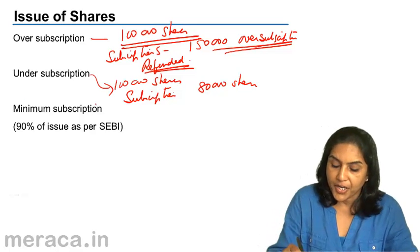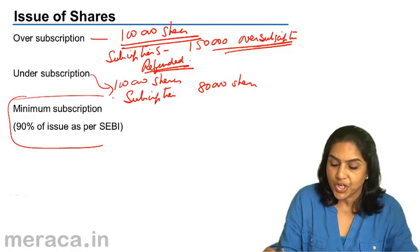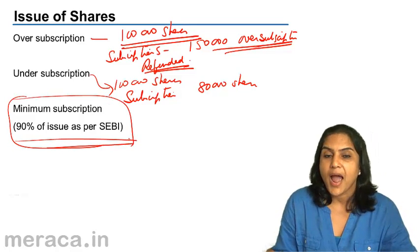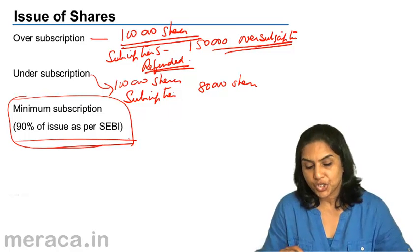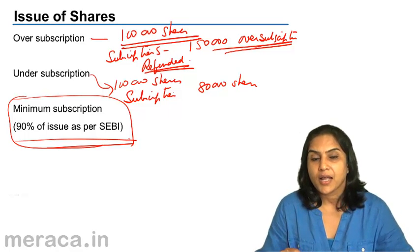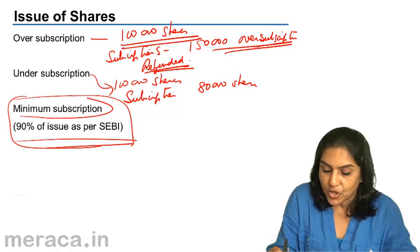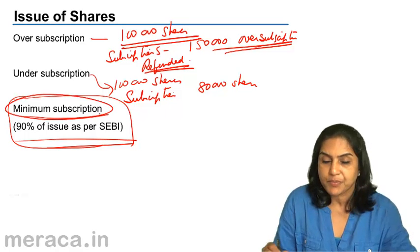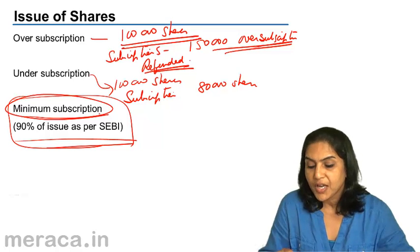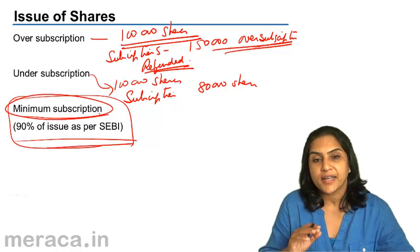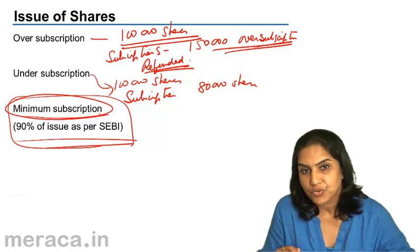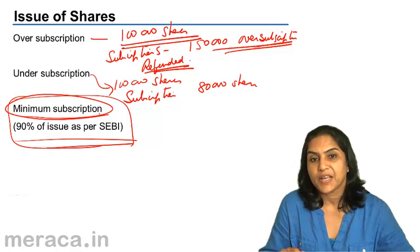According to the Securities and Exchange Board of India — according to SEBI — at least 90% of the issue has to be subscribed for. That is, this 90% is called the minimum subscription. And if the minimum subscription is not achieved, then the entire issue falls through and the money has to be refunded to the investors.